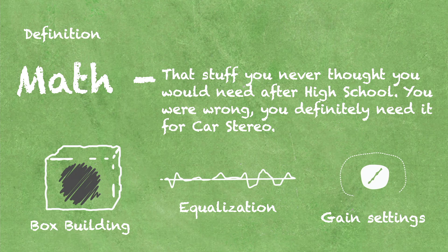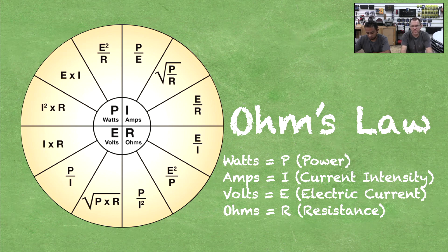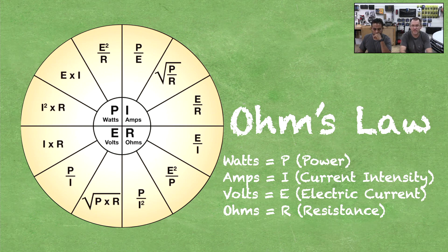This is Ohm's Law. Ohm's Law is the preferred chart of mathematical equations that we use in the 12-volt world. With this chart we can find watts, amps, volts, and ohms. Where it gets confusing: P is for watts, I is for amps, E is for volts, and R is for ohms. P stands for power, which kind of makes sense. I stands for current intensity — I didn't get that one either. Volts is electrical potential and ohms is resistance, so that's why we have P, I, E, R.